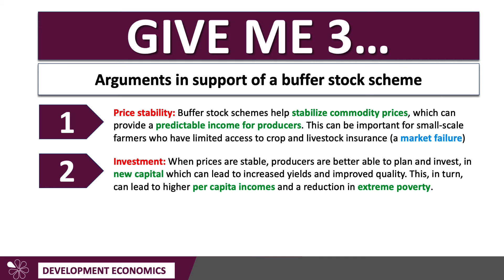The second argument is investment. If prices are more stable and volatility is reduced, producers, growers, and farmers are better able to plan and invest in new capital. The risk of investment is reduced with less price volatility. Investment in things like a new tractor or irrigation can increase yields, supply, and quality — improving farmer efficiency. This in turn can lift per capita incomes and make a reduction in extreme poverty possible.